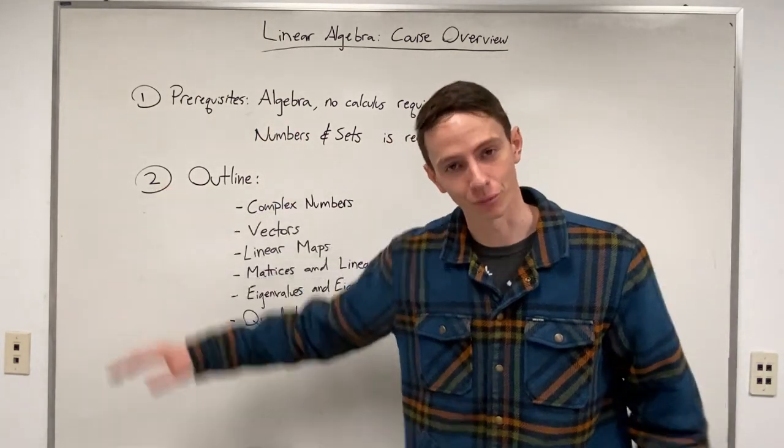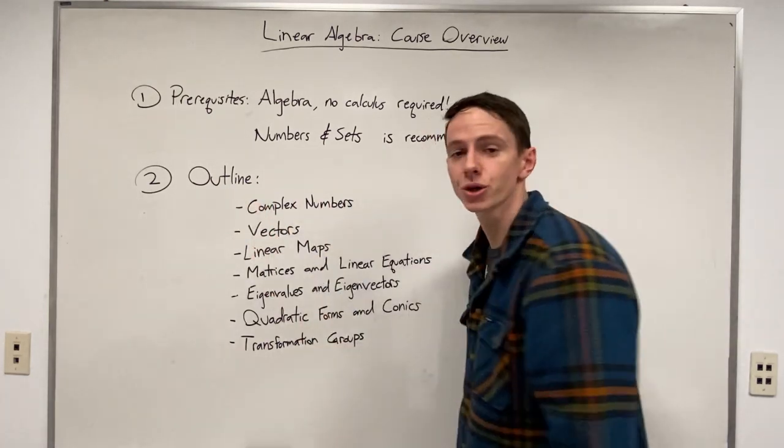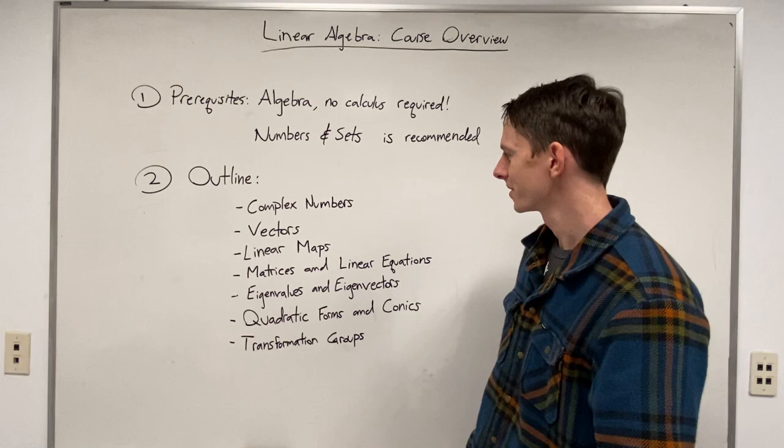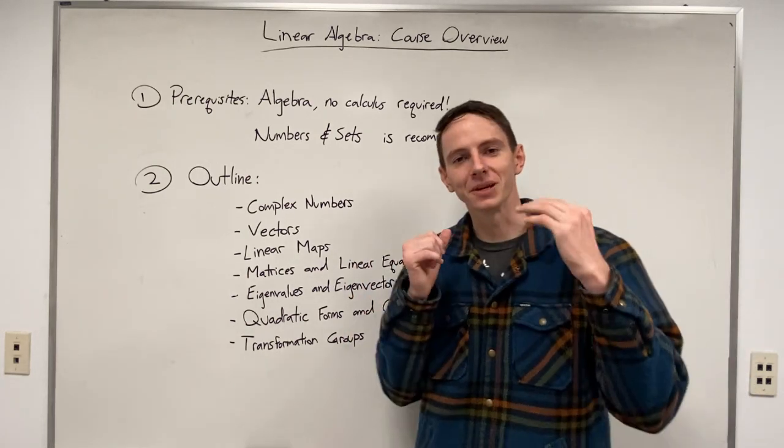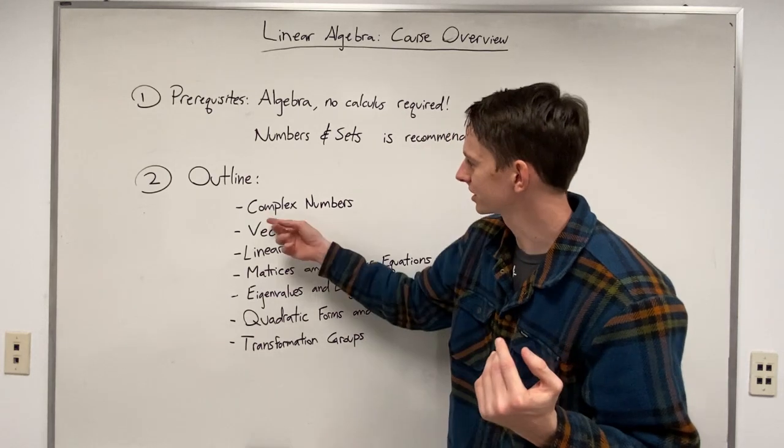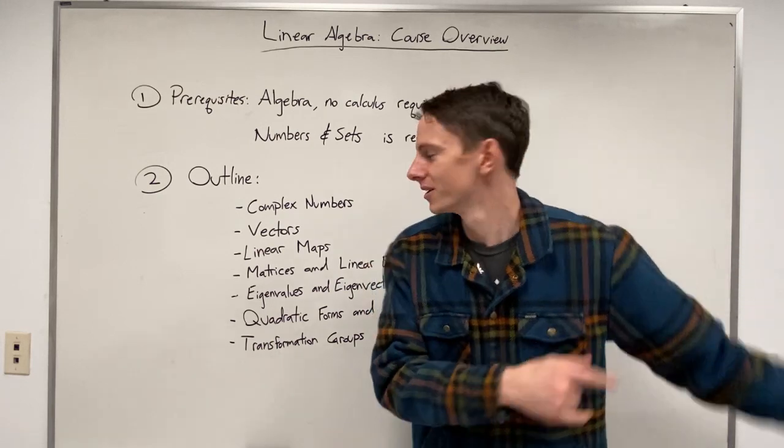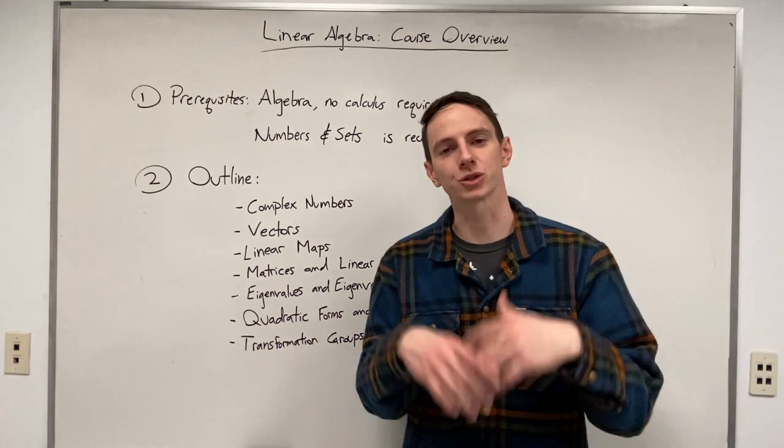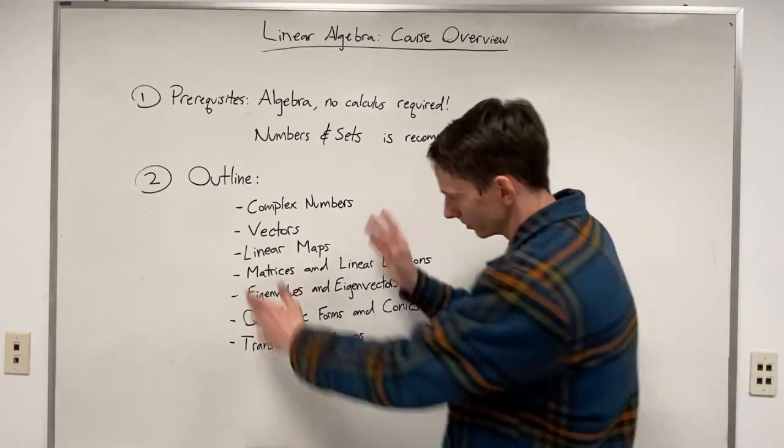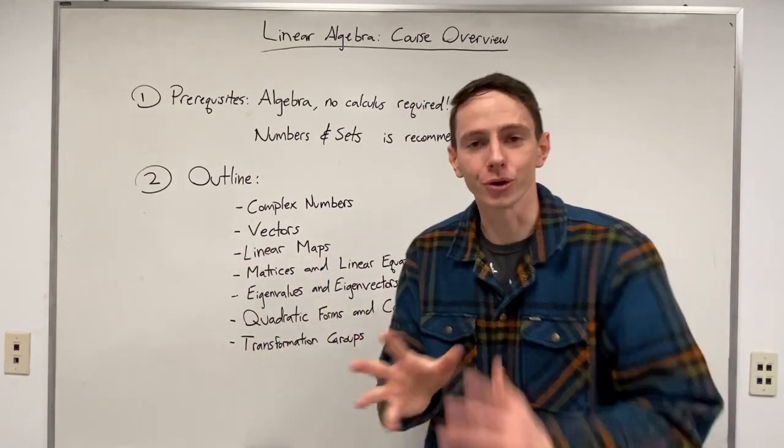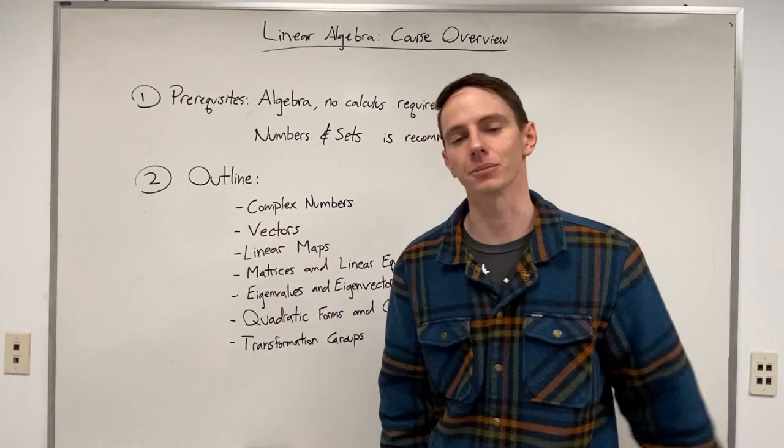Now for the actual outline, what are we going to be covering? The first section is going to be on complex numbers. And this is always an interesting one because it feels like in math education, complex numbers at some point just gets assumed that students know it without always having a specific spot to learn it. So we're saying let's put that right here. So going forwards we can assume that we know about at least the basics of complex numbers.